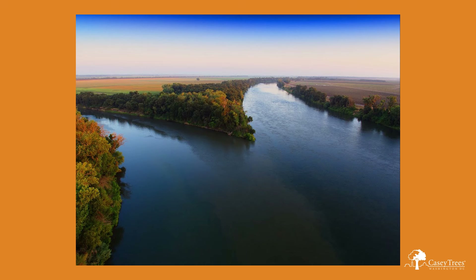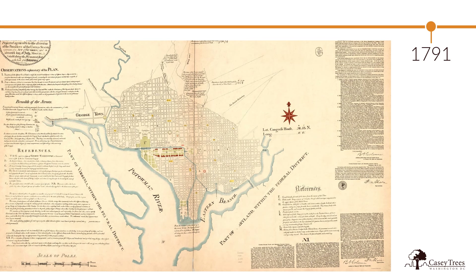However, if we fast forward past the settling of new lands, the cutting down of trees for tobacco farming, the Revolutionary War, and America's first and second attempts at a government, we get to 1791. President George Washington has been tasked with finding a location for the new nation's capital, and he chooses a valley with rivers and rolling hills not far from his Mount Vernon estate.